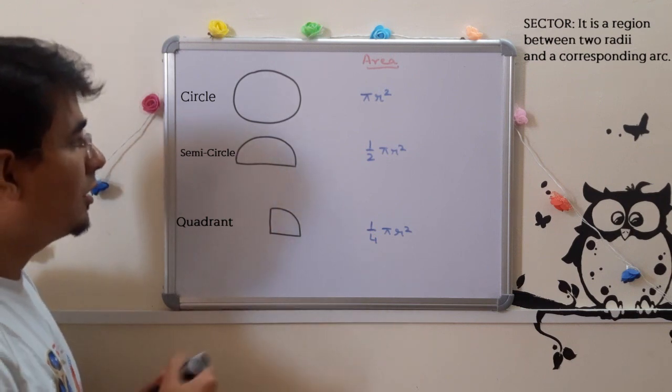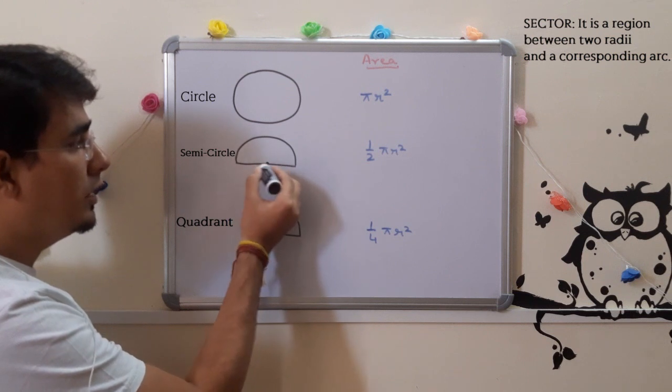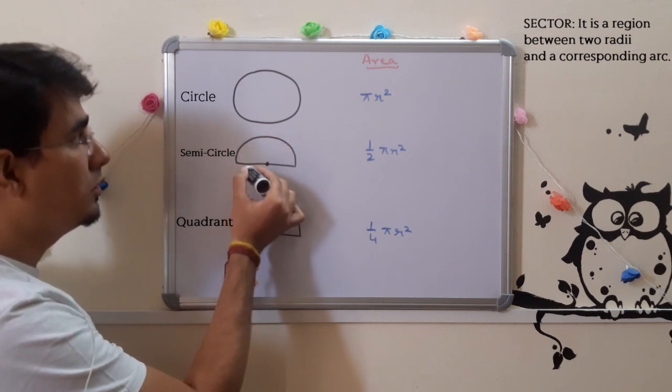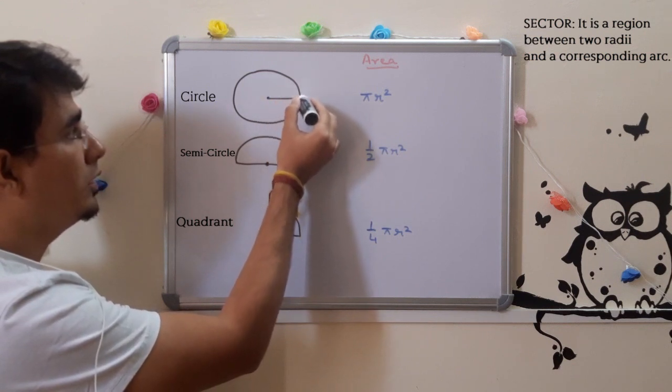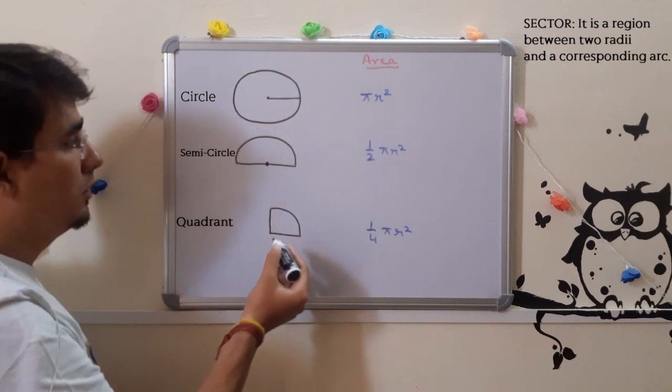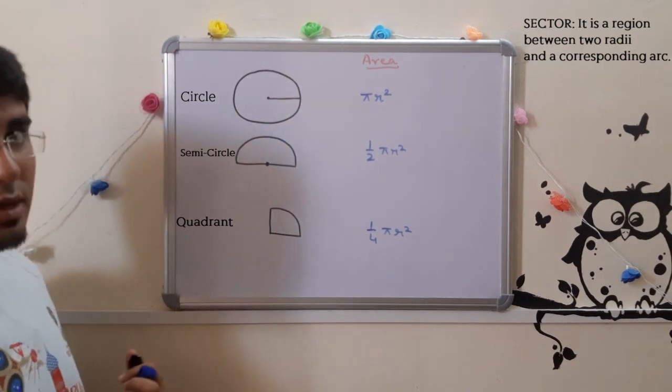You must be thinking what are the two radii here. It has a center, two radii and a corresponding arc. Here both the radii are here. Two radii and the corresponding arc. So all these can be considered as sectors.